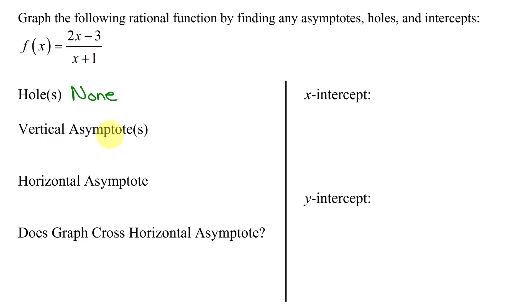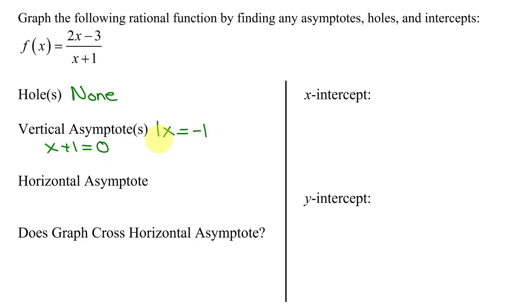Next, looking at vertical asymptotes, you look at the function in simplest form and you take the denominator x plus 1 and set it equal to 0. Subtracting 1 from both sides, you get x equals negative 1. So that is the equation of the vertical asymptote.